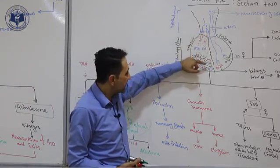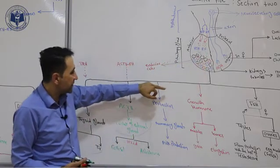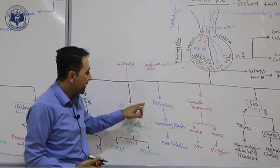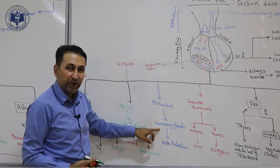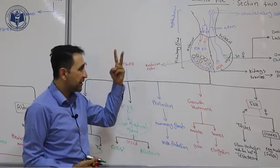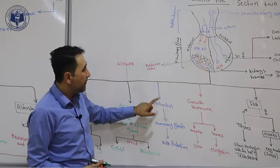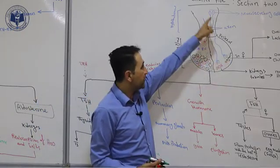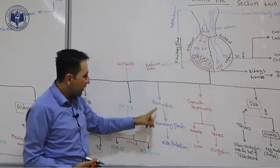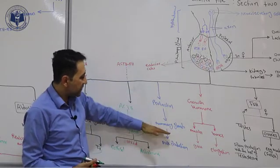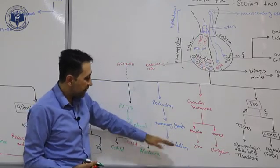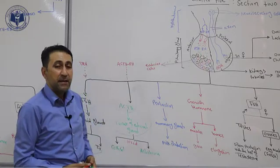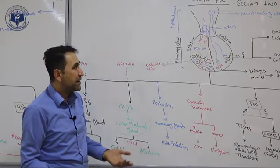The releasing hormone stimulates the endocrine cells of the anterior lobe to produce prolactin. The target cells of prolactin are the mammary glands. Two hormones therefore have targets within the mammary gland: prolactin from the anterior lobe and oxytocin from the hypothalamus.